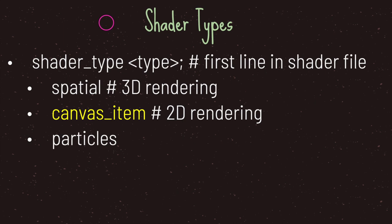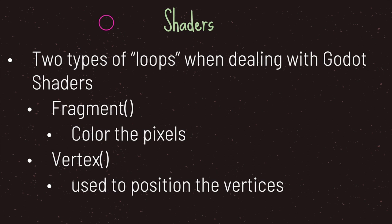The first line in your shader file should be shader_type followed by canvas_item, and you have to end your line with a semicolon. When dealing with shaders we have two different types of shader loops. The first is the fragment loop, used to color your image pixels. The second is the vertex loop, used to position your vertices.